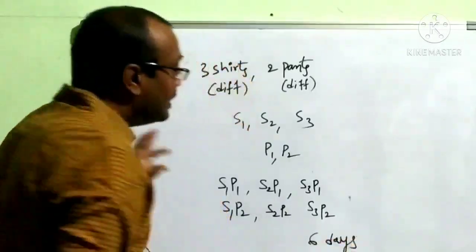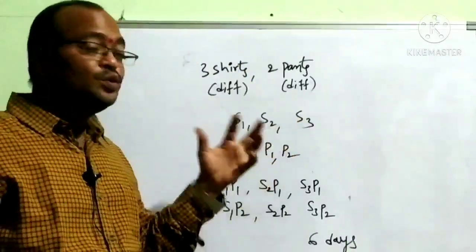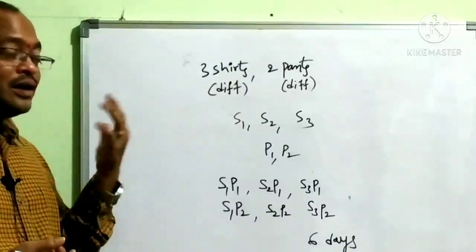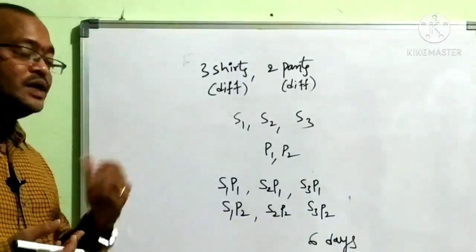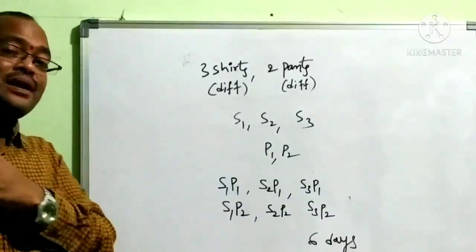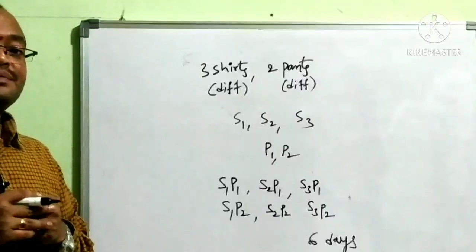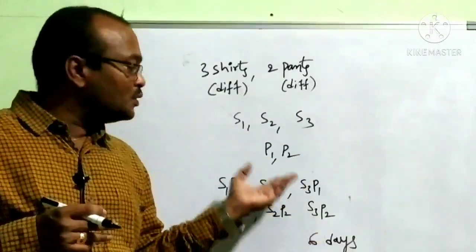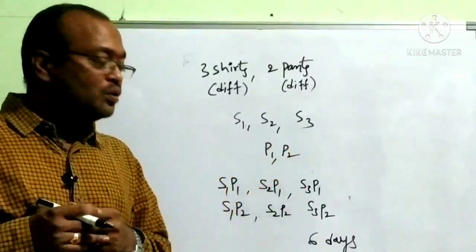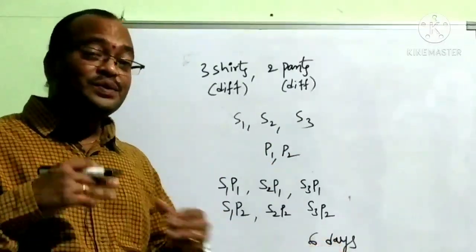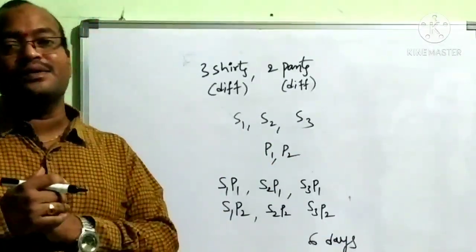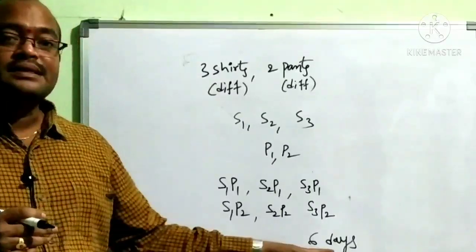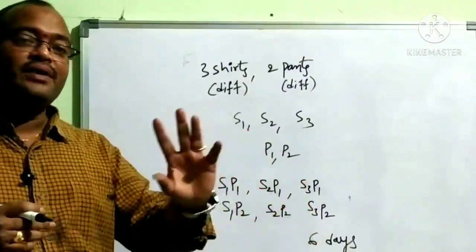So with 3 shirts and 2 pants, we get 6 different combinations. If you have 5 shirts and 4 pants, how many days can you cover? Simple: 3 × 2 = 6. Similarly, 5 × 4 = 20. Each combination is a different dress.